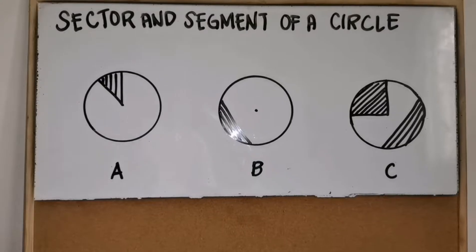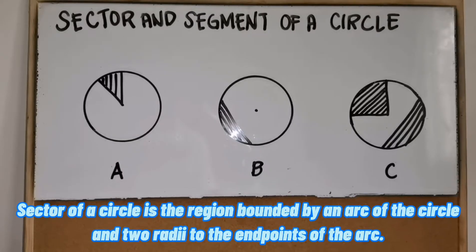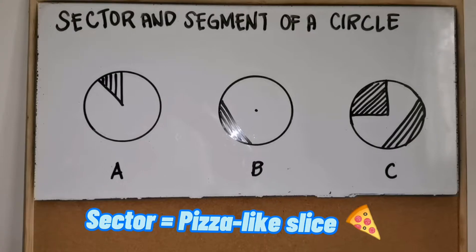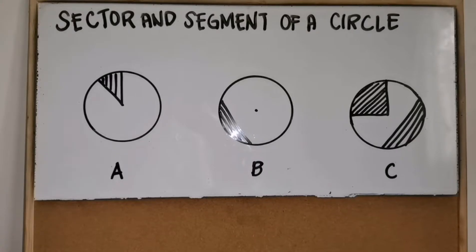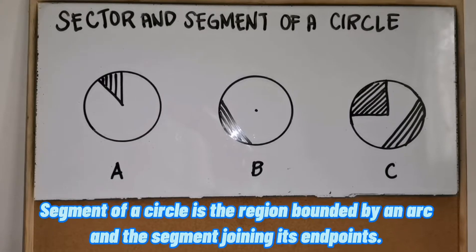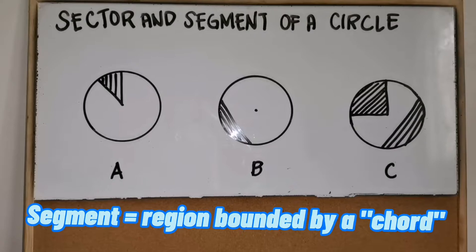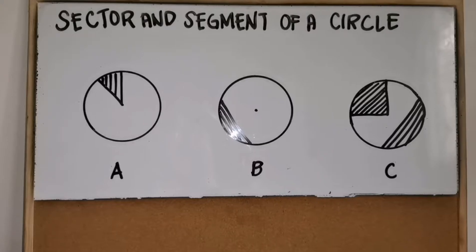First, let's talk about sector and segment of a circle. A sector of a circle is the region bounded by an arc of the circle and the two endpoints of the arc — in short, a pizza-like slice. A segment of a circle is the region bounded by an arc and a segment joining its endpoints; in short, it is a region that is being cut from the circle by a chord.